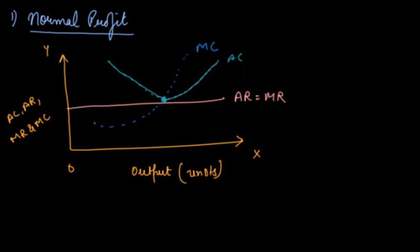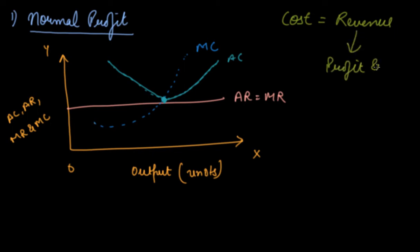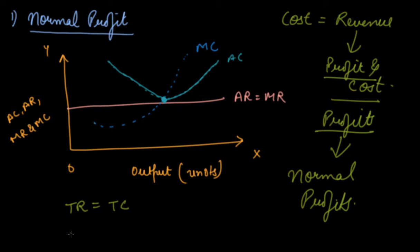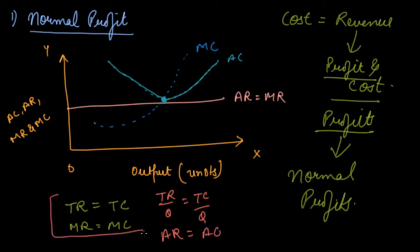In this case, your cost is equal to your revenue. Your revenue includes your profit and cost, and in this case you are left with only normal profits. So this is the situation when TR equals TC, or MR equals MC, or equivalently TR divided by Q equals TC divided by Q, which means AR equals AC. These are the conditions for equilibrium under normal profit.